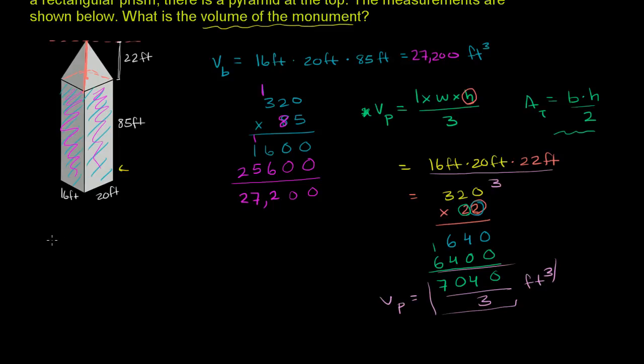And let's actually figure out what this is. So if I take 3 into, and I could use a calculator, but that wouldn't be as much fun. 3 into 7,040. 3 goes into 7,000 2 times. 2 times 3 is 6. Subtract. 7 minus 6 is 1.